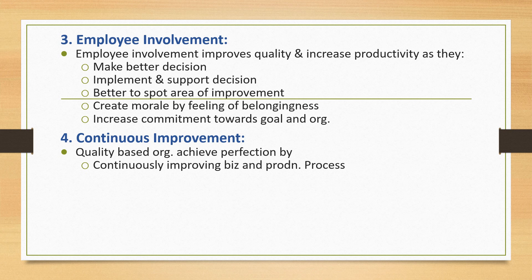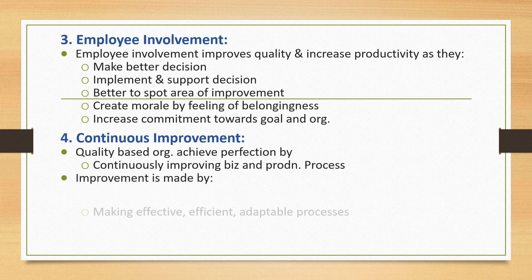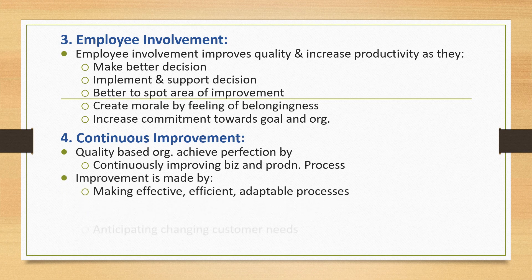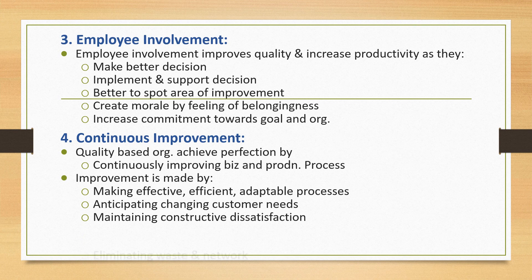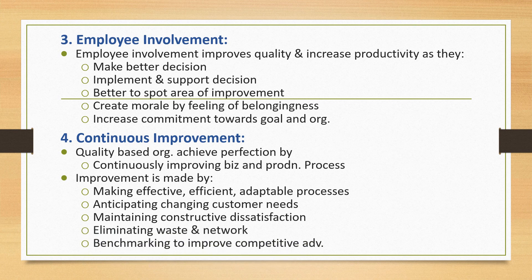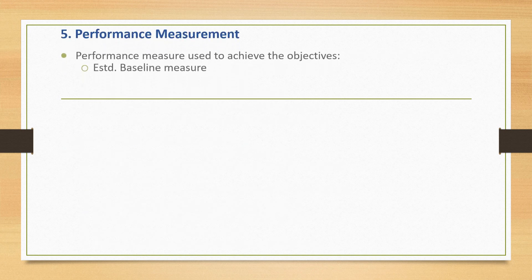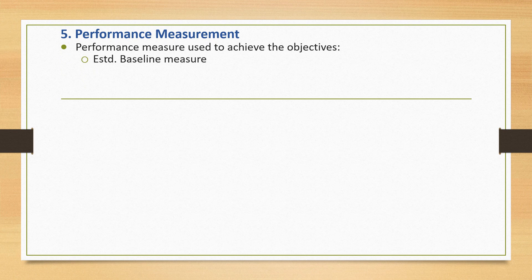Continuous improvement: quality-based organizations achieve perfection by continuously improving business and production processes. Improvement is made by developing effective, efficient, and adaptable processes, anticipating changing customer needs, maintaining constructive dissatisfaction, and eliminating waste and rework through benchmarking to improve competitive advantage.